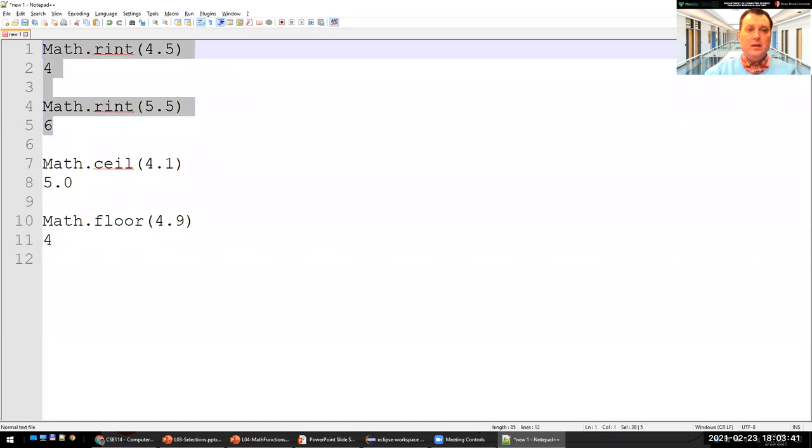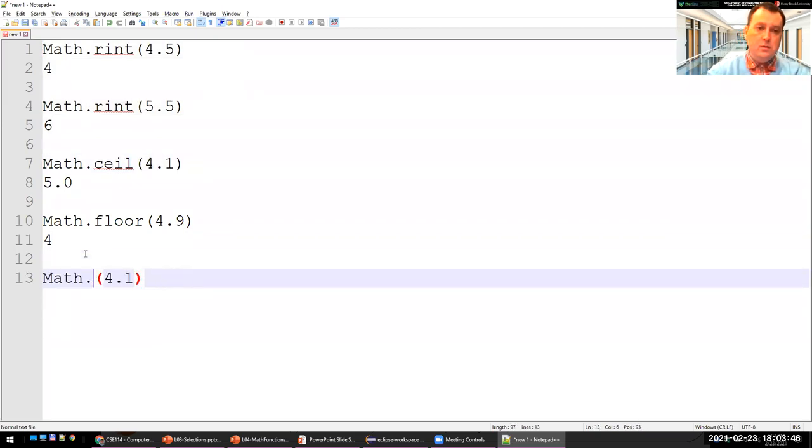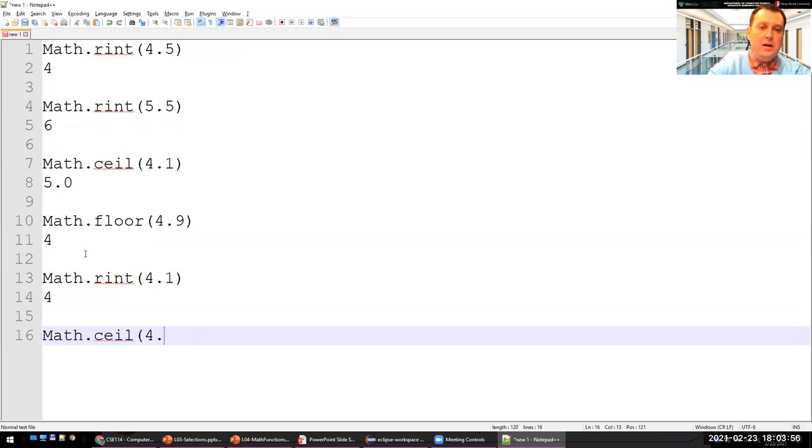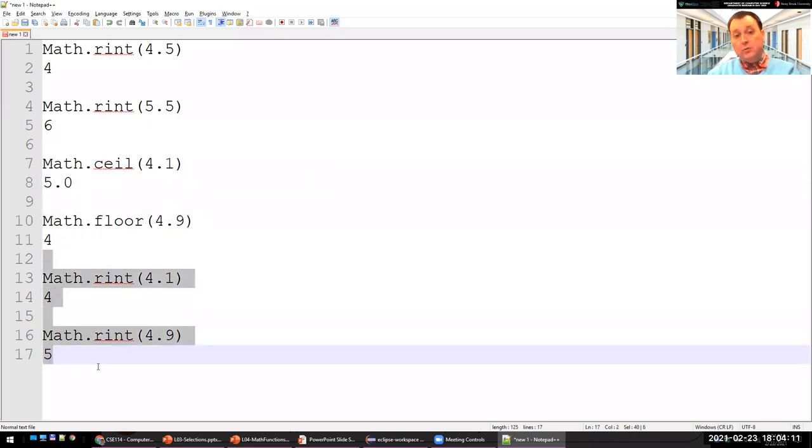So in the case of math dot rint of 4.1, it gives me 4 because basically it's the closest integer to 4.1. And similarly, rint of 4.9, it rounds up, it rounds to 5 because 5 is closer to 4.9 than 4 is. So the other ones are ceiling and floor. This is actually the rounding operator or rint. Okay. I see. Thank you. Welcome.